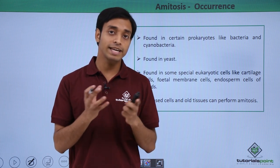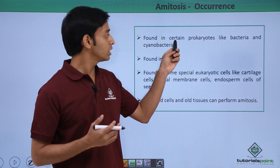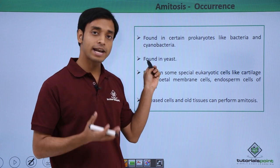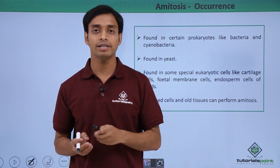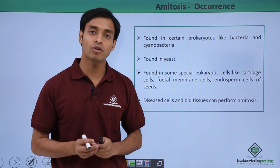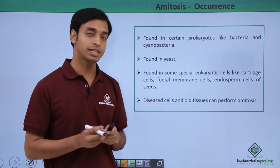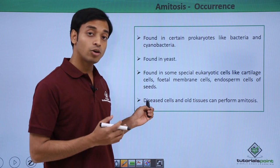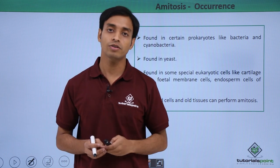Amitosis can be found mostly in prokaryotes like bacteria and cyanobacteria. Certain types of yeast can also perform amitosis, mostly for reproduction or division. In eukaryotic cells, many cells can perform amitosis, such as cartilage cells, fetal membrane cells, and endosperm cells of seeds. Additionally, disease cells and old tissues can also perform the process of amitosis.